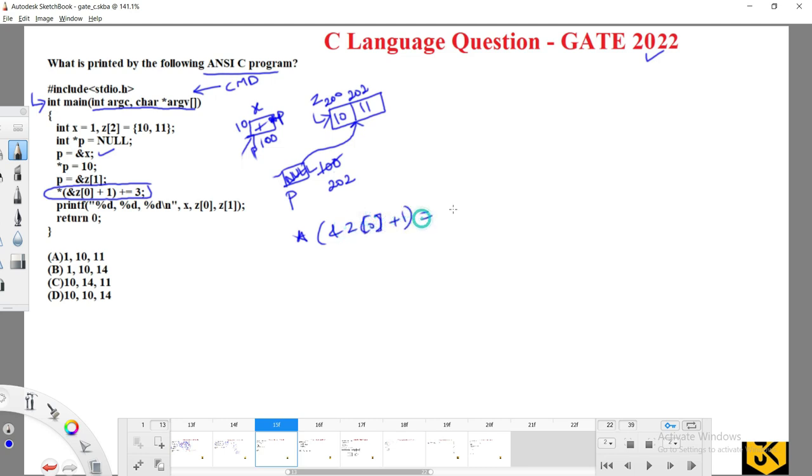We can rewrite this as *(&z[0] + 1) + 3. First we are going to evaluate this expression. Address of z[0]...